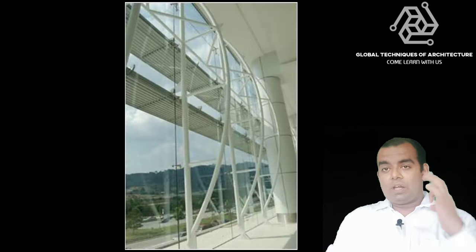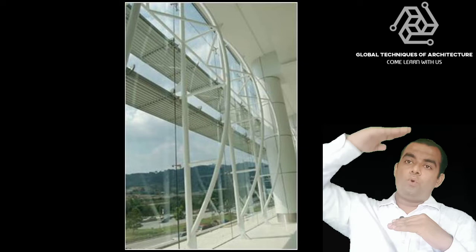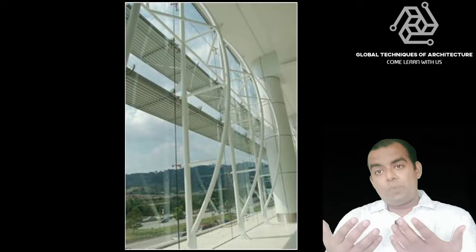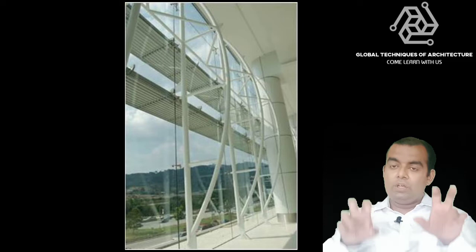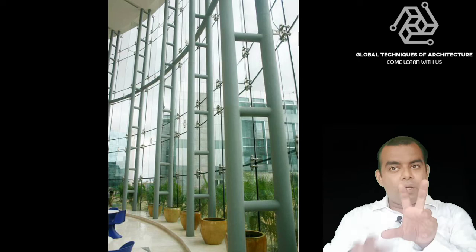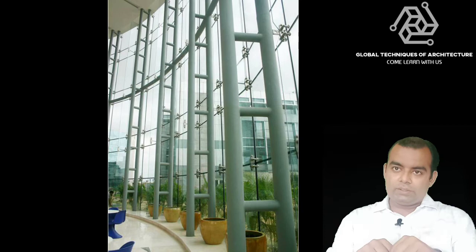The third system is the truss-based system, used when the height exceeds 12, 14, 16, or 20 meters. There is an entire load-bearing truss that takes the complete load. The glasses are held with the help of spiders with four holes — every glass has four holes, and every spider holds portions of four glass panels at their junction.